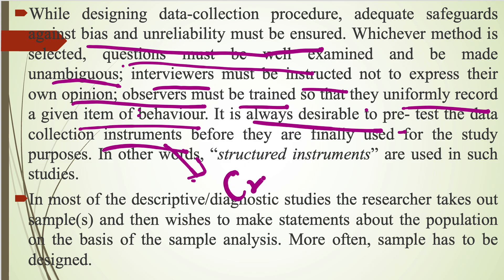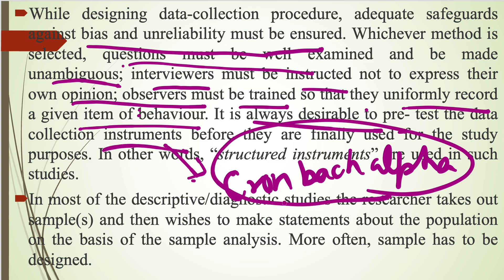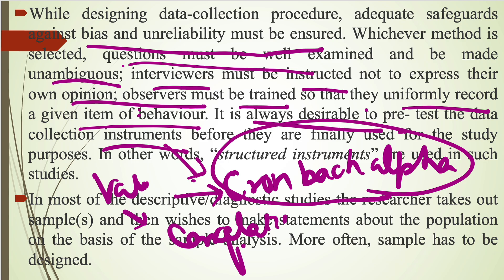The instrument should be tested through various methods. For example, Cronbach's alpha is used to check the reliability of the research instrument. Validity is checked through correlation, factor analysis, etc. These should be checked by different methods so that we select the right instrument for the particular research process. In other words, structured instruments are used in such studies.